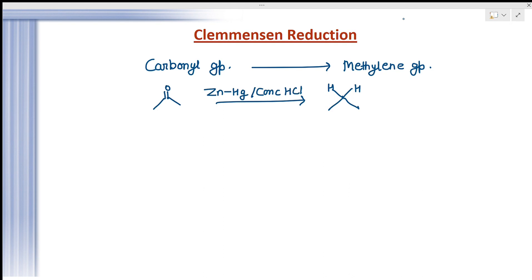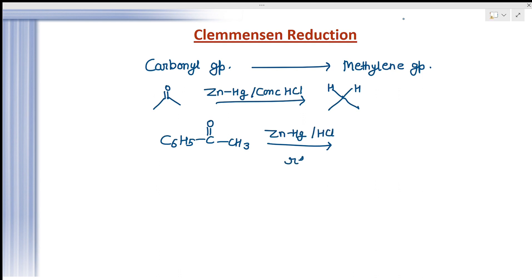Whenever aldehydes or ketones are reacted with amalgamated zinc in the presence of concentrated HCl, they are converted to hydrocarbons. This reaction is known as the Clemmensen reduction. For example, C6H5-CO-CH3 is treated with Zn/Hg in the presence of HCl by refluxing with excess concentrated HCl, giving C6H5-CH2-CH3.